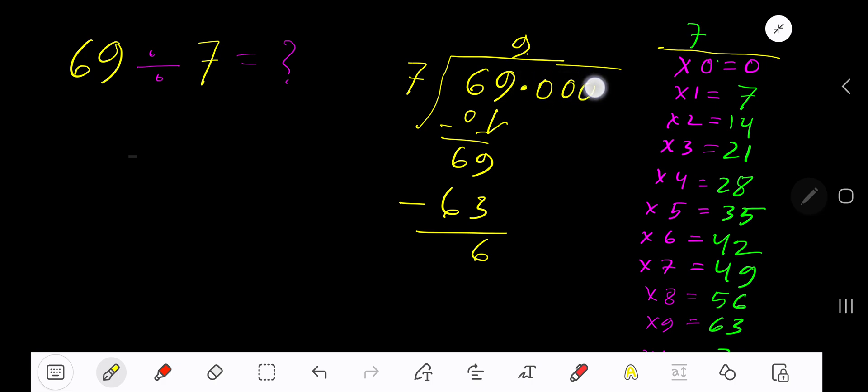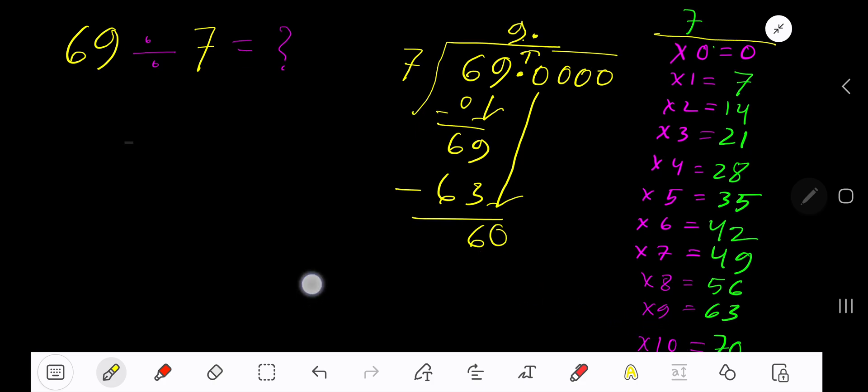Add number of zeros. Bring down the first zero. Before the zero there's a decimal. Decimal must come to the quotient directly. 7 goes into 60 how many times? 9 times 63, which is greater, so 8 times. 8 times 7 gives you 56. Subtract, you are getting 4.